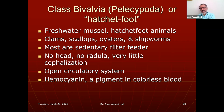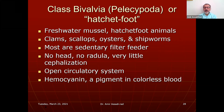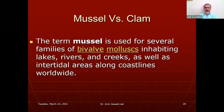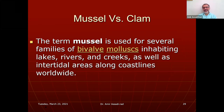Hemocyanin is a colorless pigment in the blood that acts like white blood cells, scooping up bacteria and unwanted organisms. Students often ask the difference between mussel and clam — essentially nothing. The term mussel refers to bivalves inhabiting lakes, rivers, and intertidal areas along coastlines worldwide.